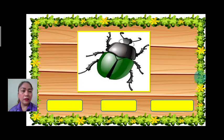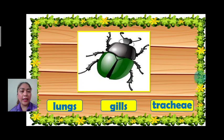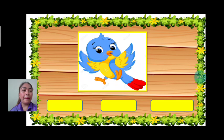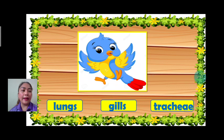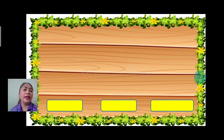Next we have bug. Is it lungs, gills, or trachea? The answer is trachea. Very good. Next we have bird. How does a bird breathe? Lungs, gills, or trachea? The answer is lungs. Very good.